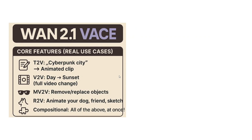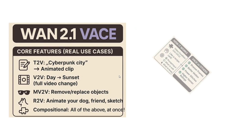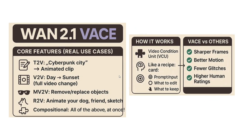Core features include text-to-video, video-to-video, rendering to video, animating sketches, and compositional generation — all in one. How it works: it has a special unit called the Video Condition Unit. It's like a recipe — you input the prompt and specify what to edit and what to keep. These are the three core elements: the prompt, what to edit, and what to preserve, and in this way video generation happens.